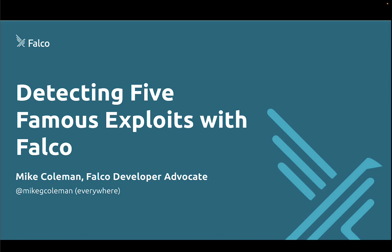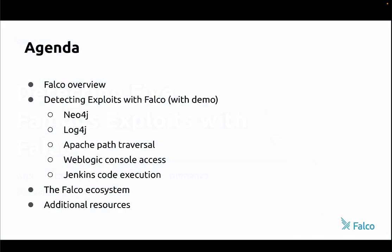We're going to do that in the context of five famous exploits. We'll start with a quick overview of Falco, and after that we're going to look at five different exploits with a demo for each one: Neo4j, Log4j, a path traversal attack on Apache, a WebLogic console access remote execution — again through path traversal — and then a Jenkins exploit. Then we'll wrap up with a quick discussion about the rest of Falco's ecosystem.